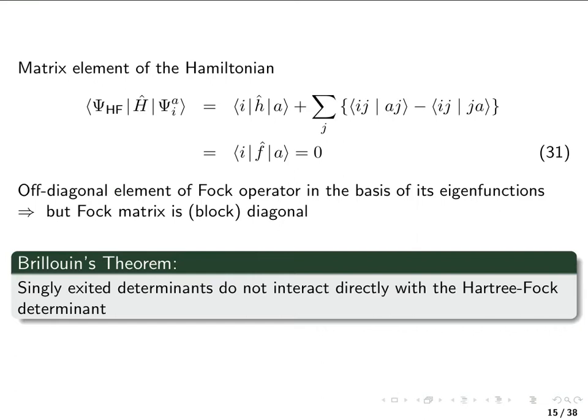Now let's look at a particular matrix element with one of these singly excited determinants. Let's look at the matrix element of the Hamiltonian between the Hartree-Fock Slater determinant and such a singly excited determinant. To calculate what that gives,